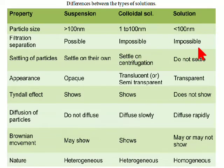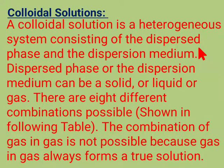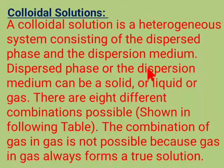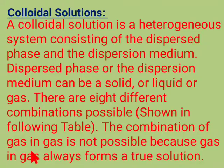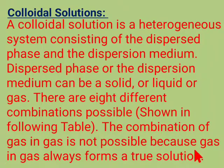Colloidal solution is a heterogeneous mixture consisting of a dispersed phase and a dispersion medium. The dispersed phase or the dispersion medium can be a solid, liquid, or gas. You can have 8 different combinations possible in colloidal solution, but only one combination — gas and gas — is not possible, as that forms a true solution.